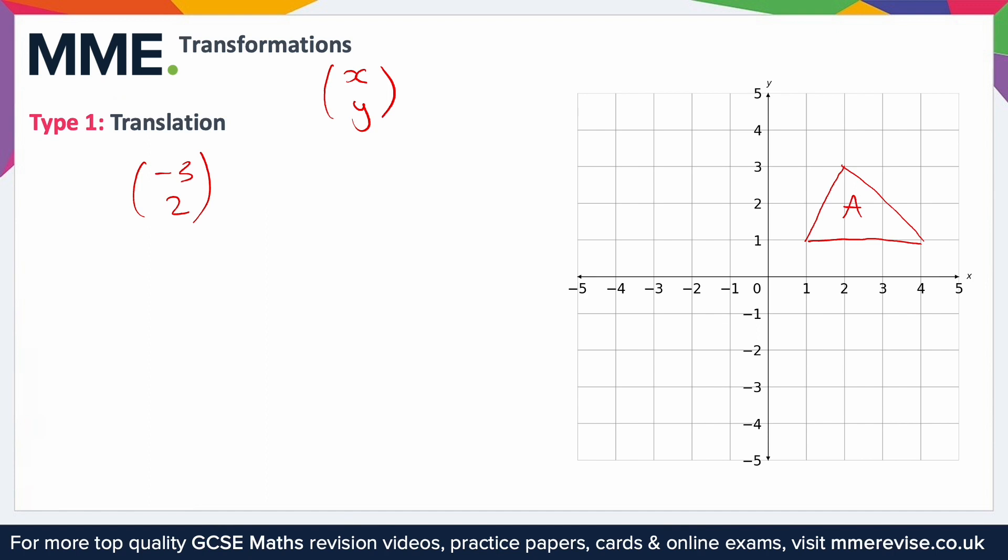So what I would do is I would pick a point on the shape that you're trying to move. So for example, if I pick this point and then just try and move that point alone. So we know that we're moving three to the left. So one, two, three, and then we're going to move two up. So one, two. So I now know that this point is here.